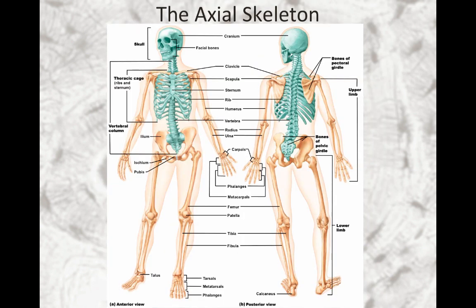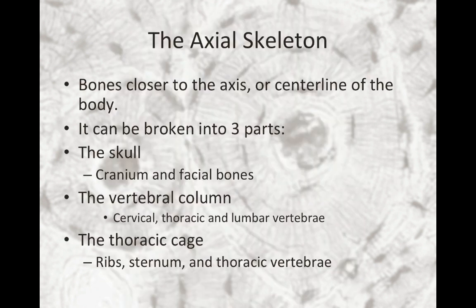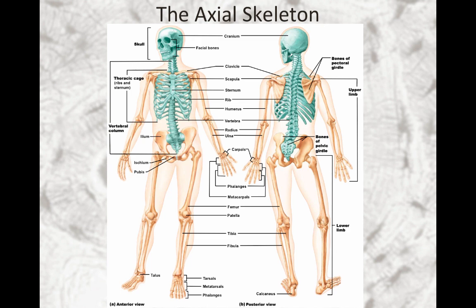The next topic we'll discuss is the axial skeleton. The skeletal system can be broken into two broad groupings: the axial skeleton and the appendicular skeleton. We'll cover the axial skeleton this week and leave the appendicular skeleton for next week. The axial skeleton consists of bones closer to the axis or centerline of the body and can be broken into three parts: the skull, which consists of the cranium and facial bones; the vertebral column, which consists of the cervical, thoracic, and lumbar vertebrae; and the thoracic cage, which consists of the ribs, sternum, and thoracic vertebrae. The axial skeleton bones are highlighted in green on both the anterior and posterior view images.